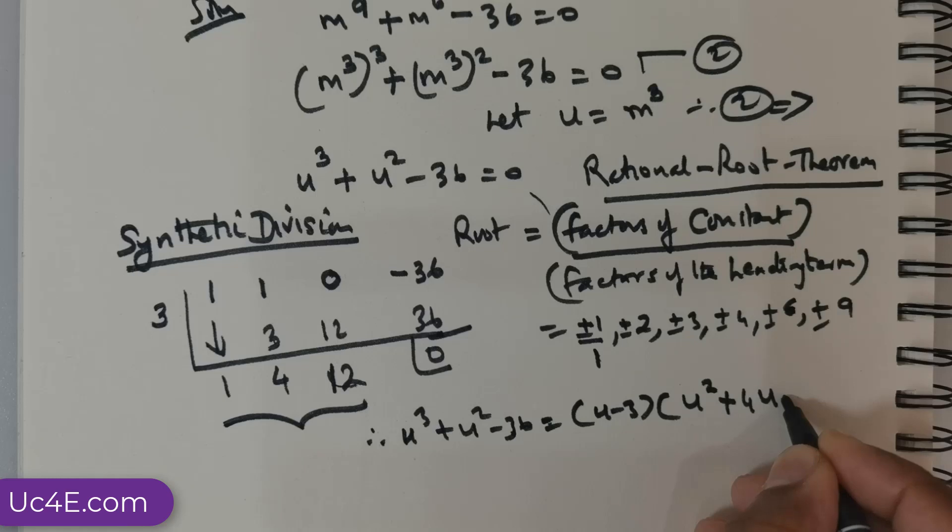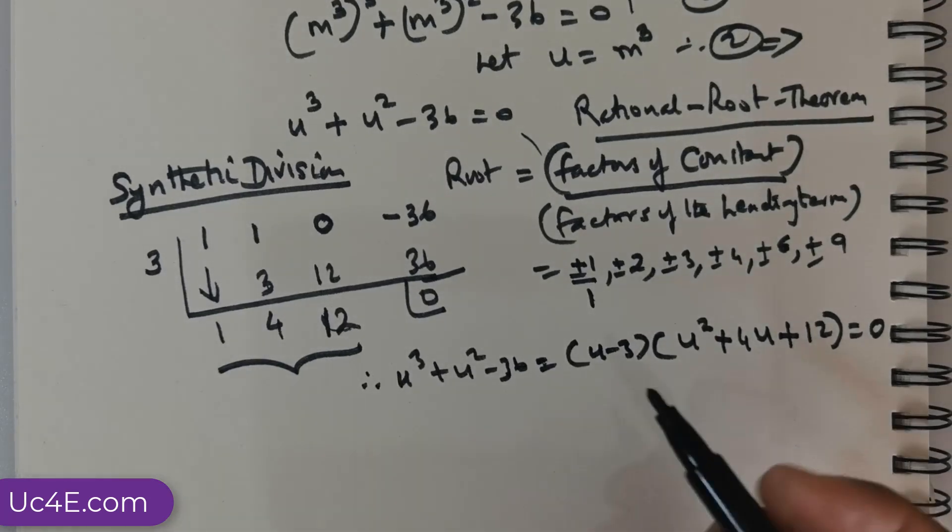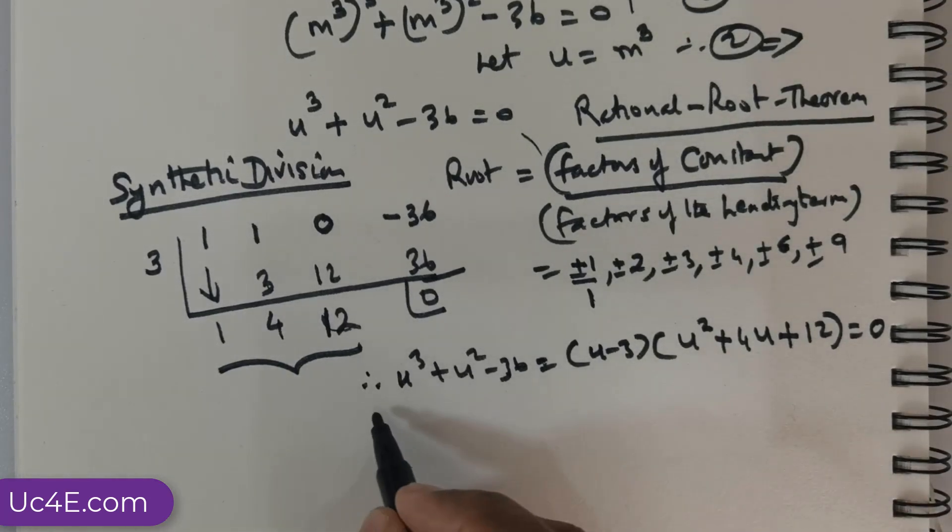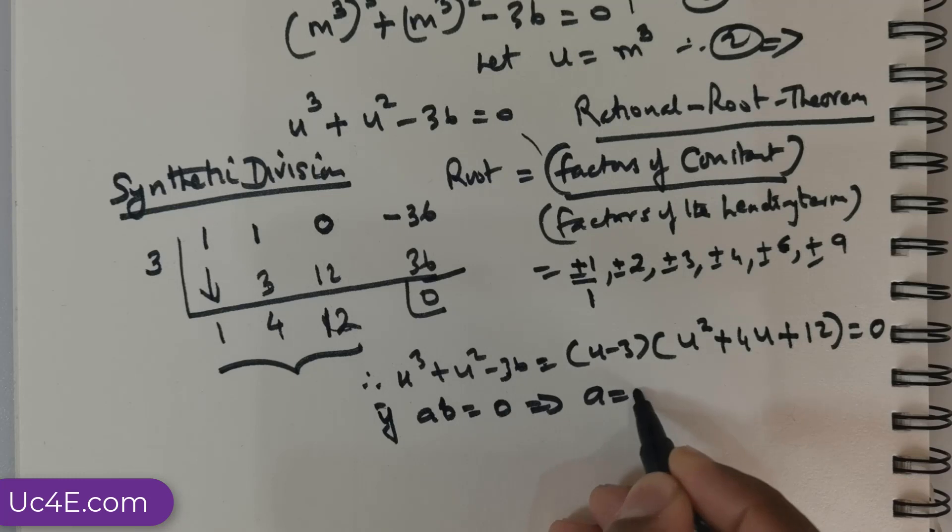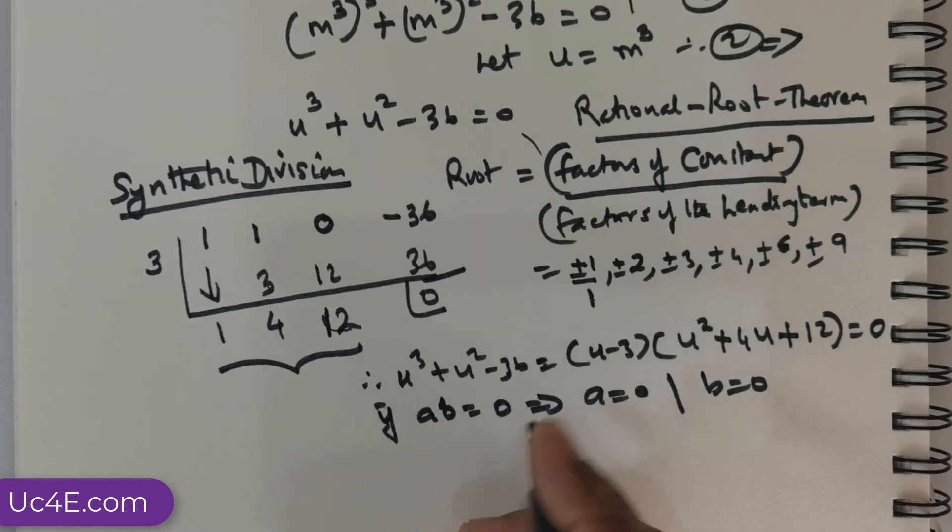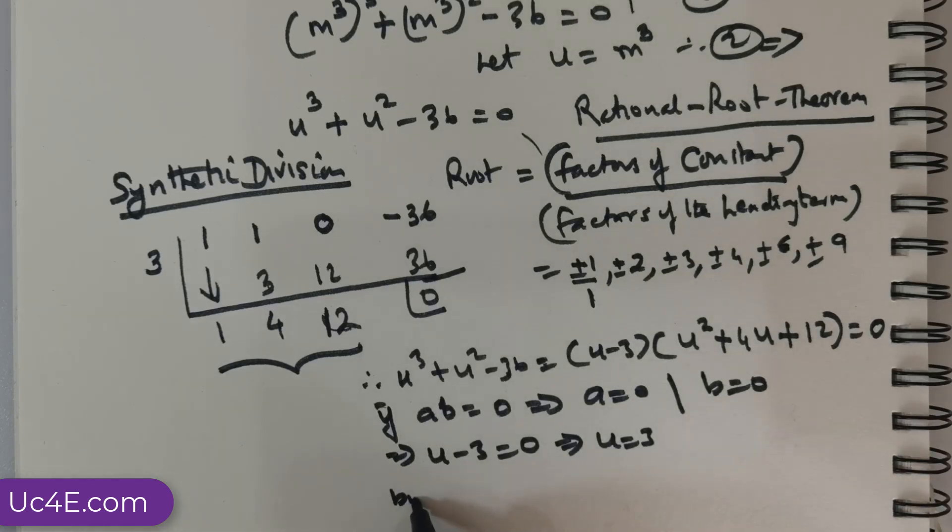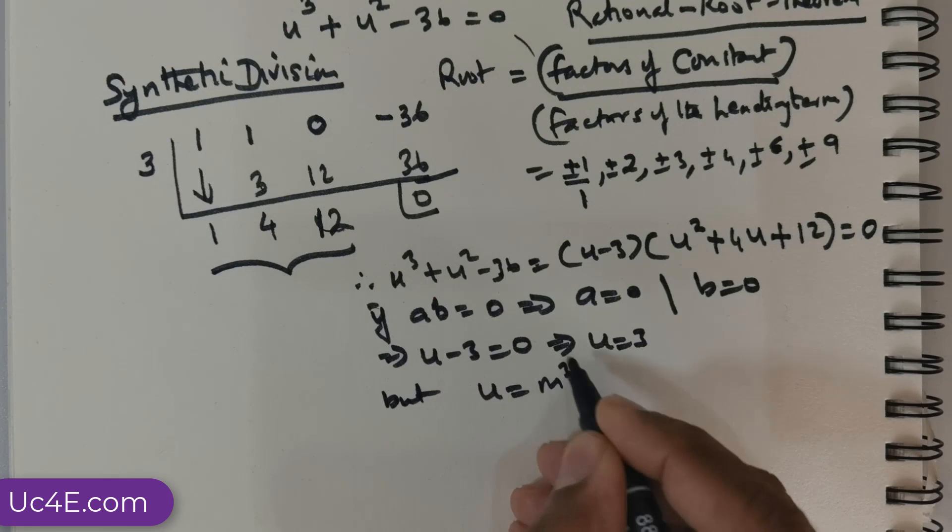And, this is the quotient. So, this is going to be starting with u^2, 4 times u, plus 12 = 0. Right? This is what we have got. And, clearly, from the law of algebra, you know that if a times b = 0, then this would mean a = 0 or b = 0. So, if a = 0, this in turn would mean u - 3 = 0, which means u = 3.